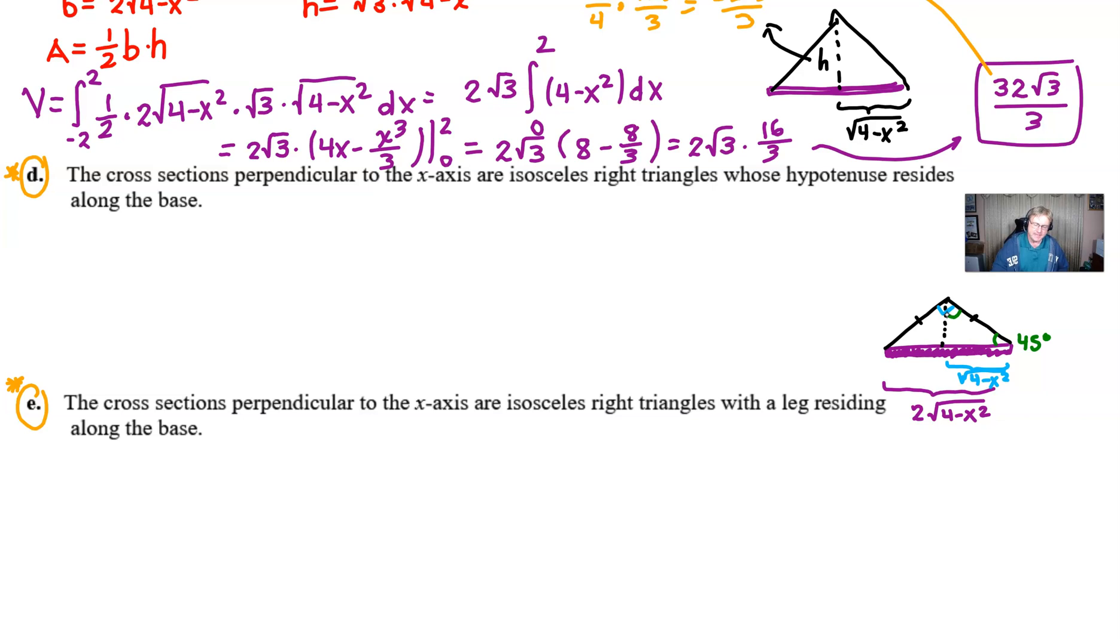And what we know is that the hypotenuse, well, let's step back. We know the two legs, that's where I want to go with this. The two legs, which would be this piece and this piece of the little triangle, are going to be the same. And so therefore, the height, which is right there, is just square root of four minus x squared. So everything is all set. There's our height. There's our base. Let's put it all together.